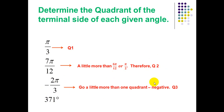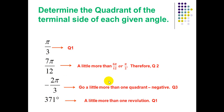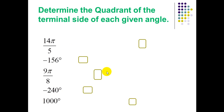Negative π/3 is a little more than one quadrant in the negative direction, so it lies in the fourth quadrant — wait, it goes clockwise, placing it in the fourth quadrant. For an angle a little more than one revolution (360° plus a little more), it is in the first quadrant.